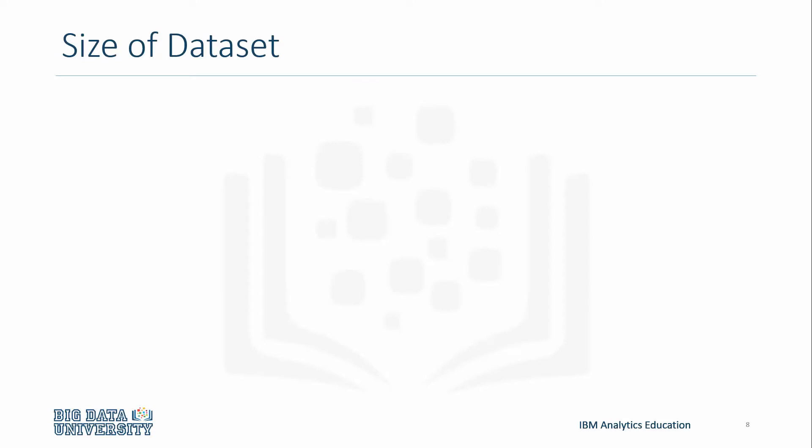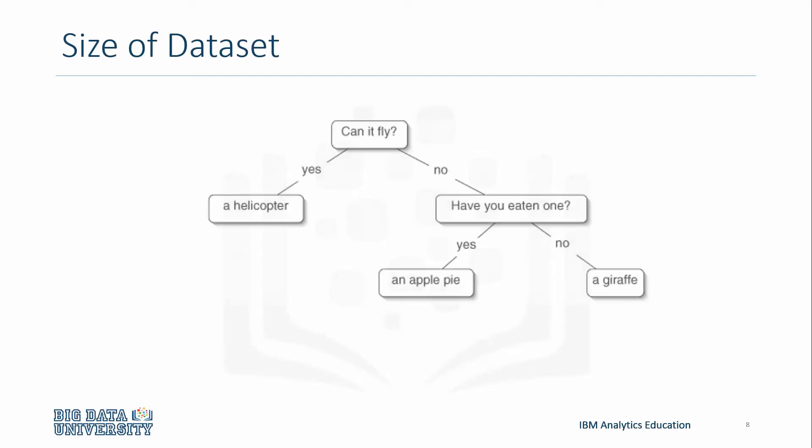Imagine that you had a very large dataset, maybe somewhere around 1 million observations with 10,000 attributes. Think about how large of a tree we would have to create if we did binary splits on this dataset.